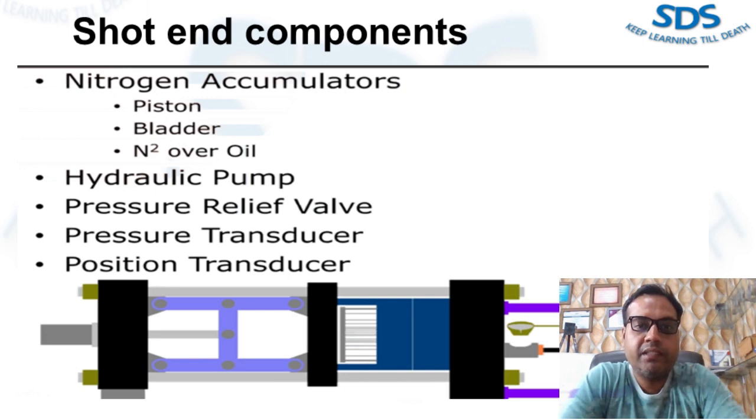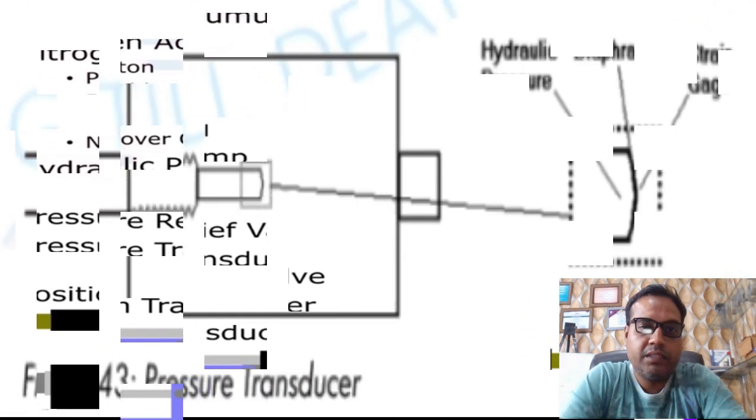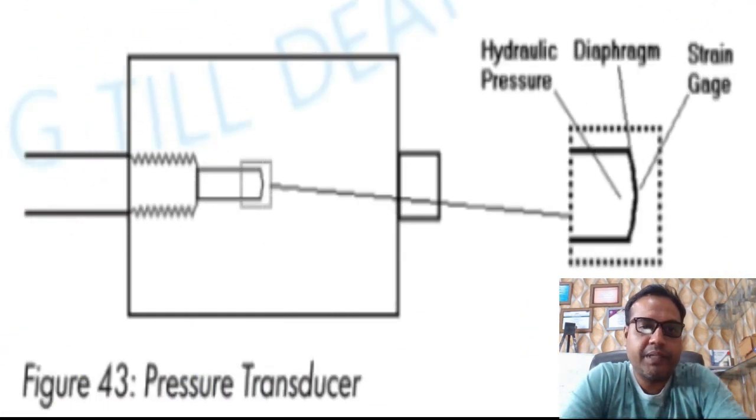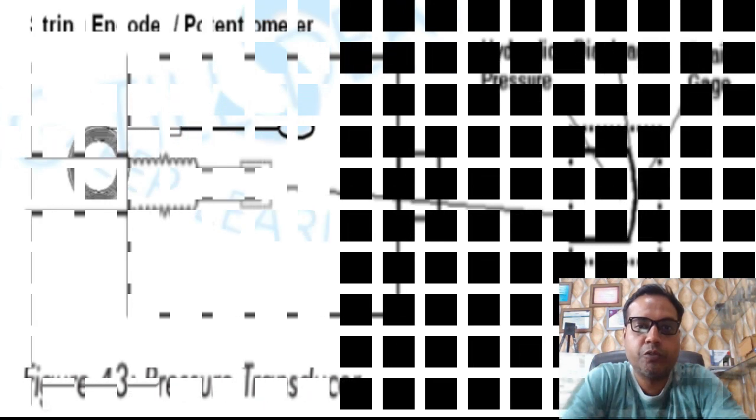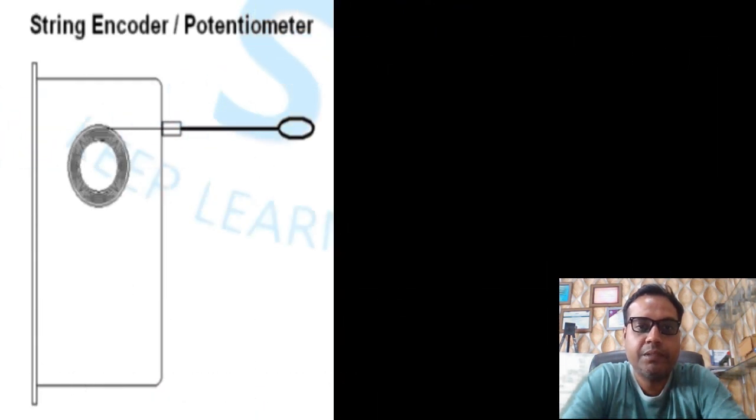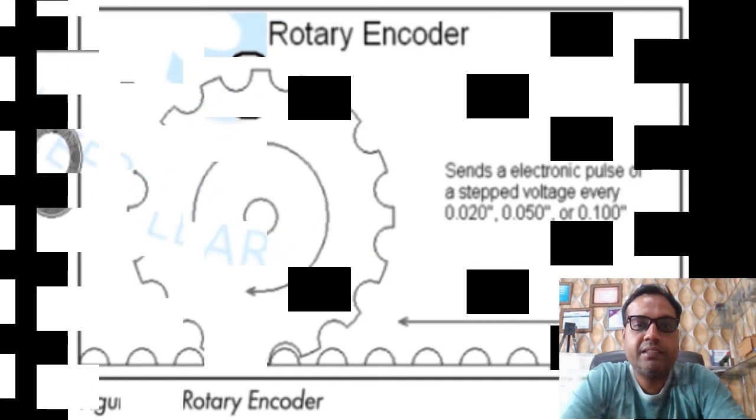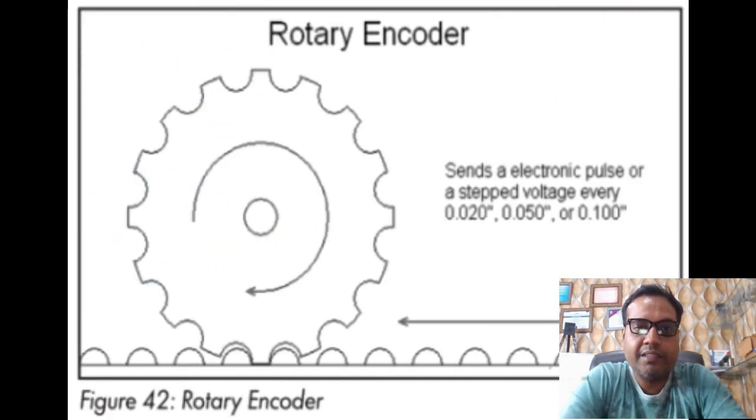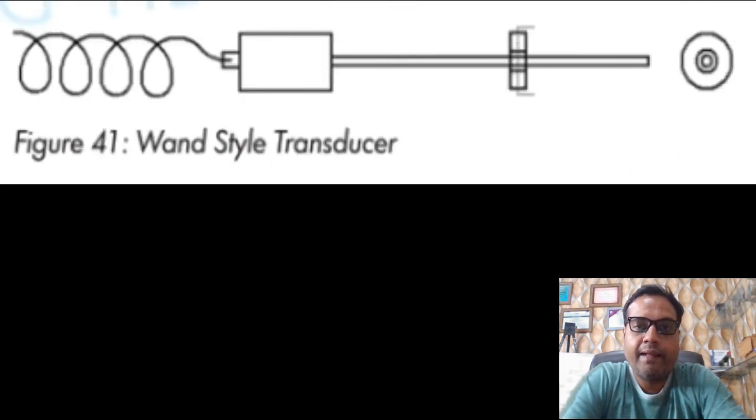The pressure in the accumulator should be visually audited periodically by the die casting operator and monitored each shot by the PLC or shot monitoring system. This requires the use of hydraulic pressure transducers. The motion of short end also must be monitored. This is done by position and velocity transducers. There are several position transducers we will discuss later and show how they look like.